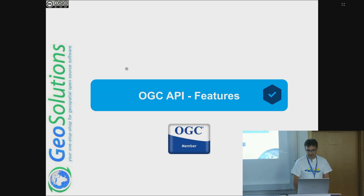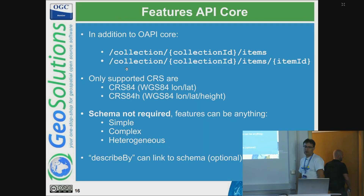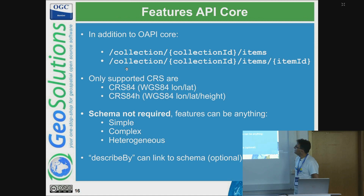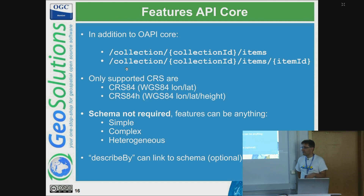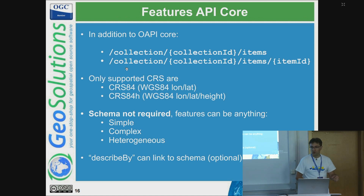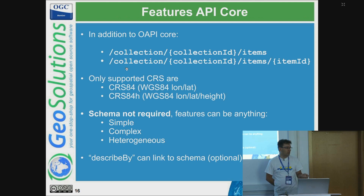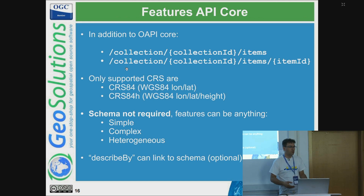OGC API Features: the core, in addition to OGC API Commons, adds the notion of items inside a collection. The only supported CRS is CRS84, which is WGS84 in longitude-latitude order — mind the order — or CRS84h, which includes height. Schema is not required unlike WFS; you can have schema-less services. The specific GeoServer implementation is schema-oriented because the core engine is schema-oriented, but at the specification level you don't have to be. You can have an Elasticsearch instance full of documents with unrelated structures and still publish it through OGC API Features correctly.